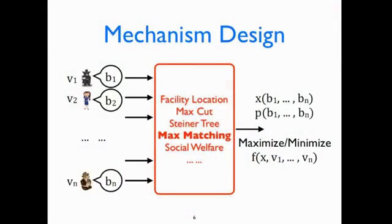Suppose we take this into account — what does the picture look like? We want to design a mechanism. As input, instead of the true underlying data, we receive the reported value from each individual agent, which may or may not equal the true underlying data. Based on this reported data, we need to pick some outcome x along with a payment vector p.